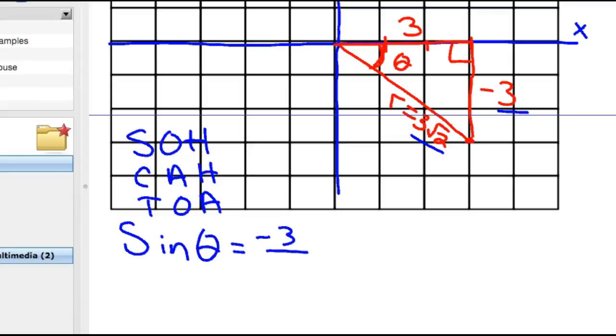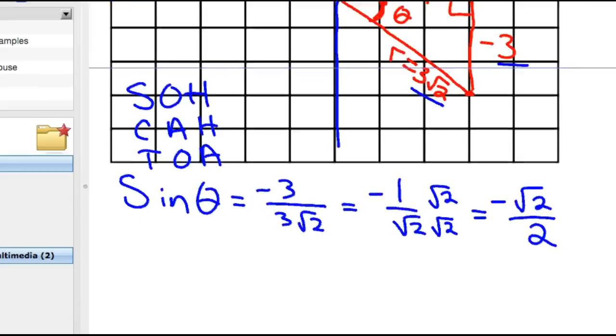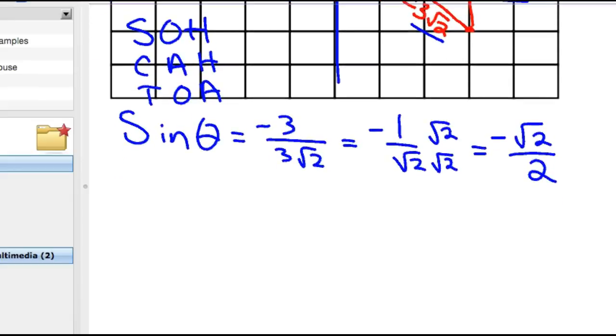So negative 3 over 3 root 2. We want to simplify this. The 3's would cross out, so we really have negative 1 over root 2. We also don't want a radical in the denominator, so I'll rationalize that denominator. So sine of theta is negative root 2 over 2. I'm sorry if I went too fast on that. You might look up rationalizing denominators if you missed what I just did there.